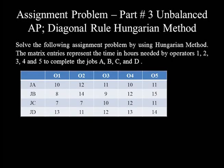Solve the following assignment problem by using the Hungarian method. The matrix represents the time in hours needed by operators 1, 2, 3, 4 and 5 to complete jobs A, B, C and D.